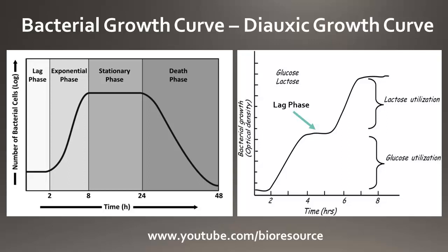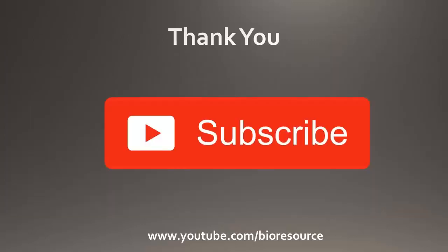Once the enzymes are ready, the bacteria start utilizing lactose and growth proceeds exponentially again. That is the difference between the regular growth curve and the diauxic growth curve. This is also known as a biphasic growth curve because there are two lag phases involved when the bacteria are grown on both glucose and lactose media.